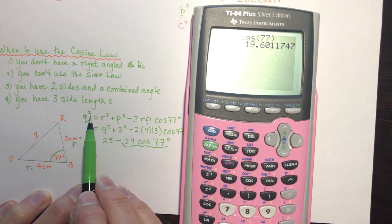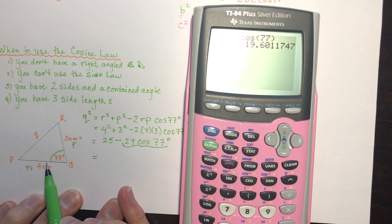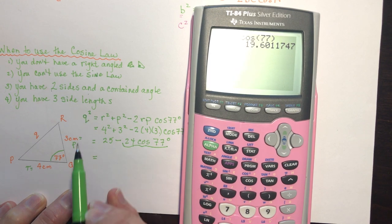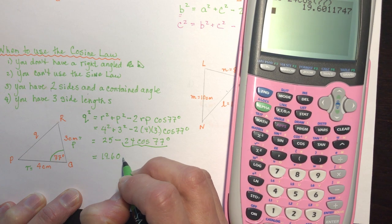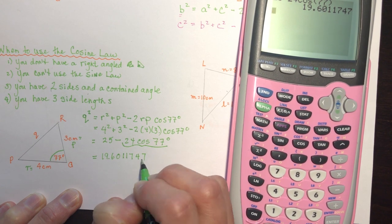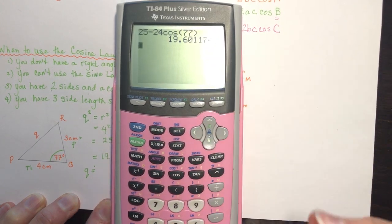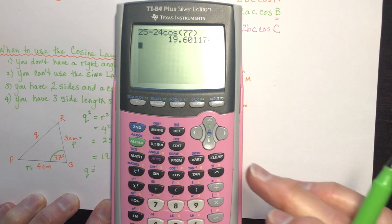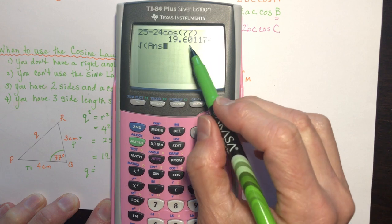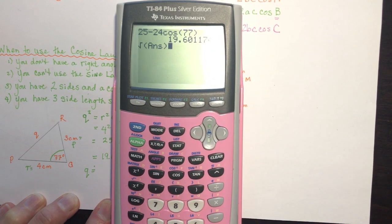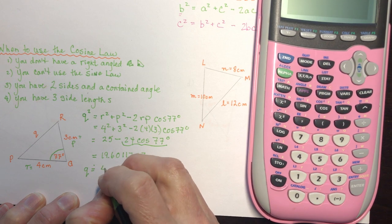Remember, 19.6 is q squared. So q equals the square root of 19.6. Your calculator is smart — if you take the square root of the previous answer it keeps all the decimal places for accuracy. That gives q approximately equal to 4.4 centimeters.